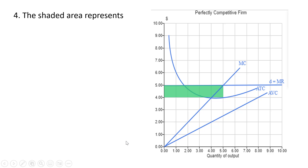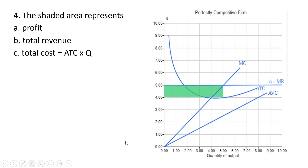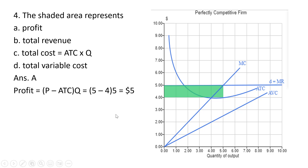Question four. The shaded area represents profit, total revenue, total cost, or total variable cost. The correct answer is profit. Profit can be thought of as price minus average total cost times quantity, and that's what we have here. The width is price minus average total cost, which is one dollar in this case — five minus four. Multiplying that over five units gives us a total profit of five dollars.